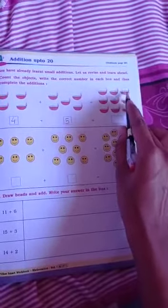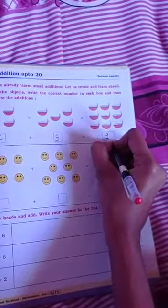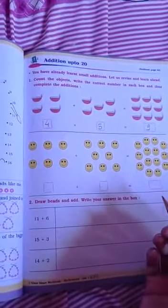How many diyas? 1, 2, 3, 4, 5, 6, 7, 8, 9. 9. Got it? Understand? Next question.